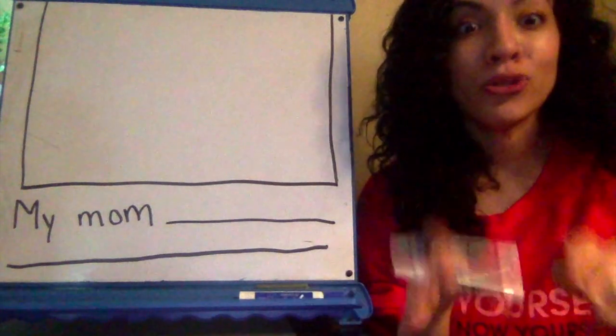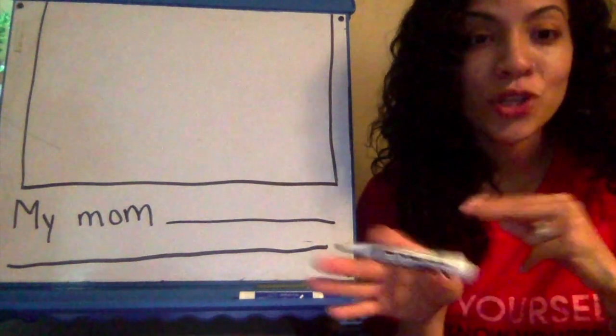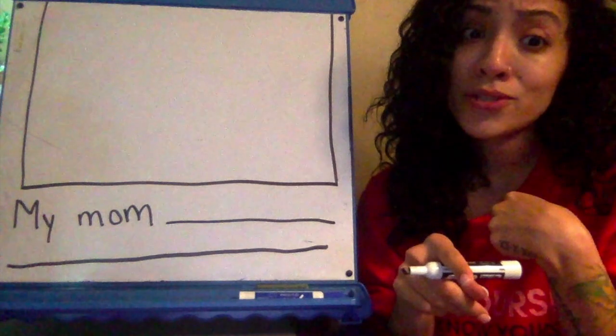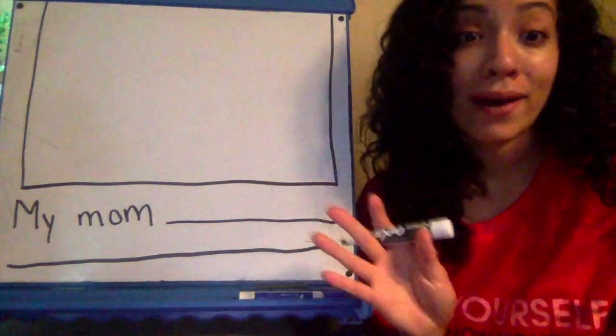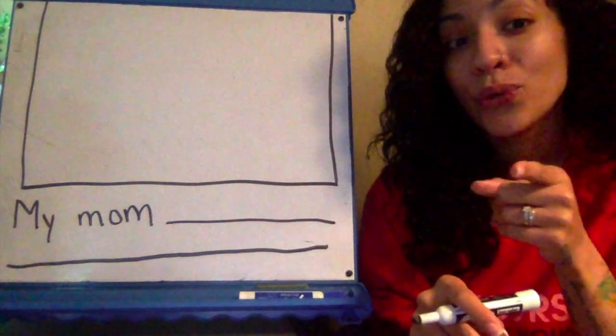You think about what you do with your mom and then you can write it. You do not go with your mom to Starbucks. Maybe you do. I don't know. But you write what you do.